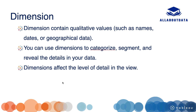What is a dimension? Dimension contains qualitative values like names, dates, geographics, category, subcategory, and segment. Dimensions affect the level of detail in the view.